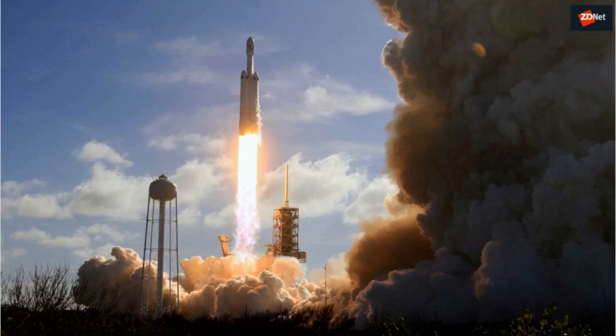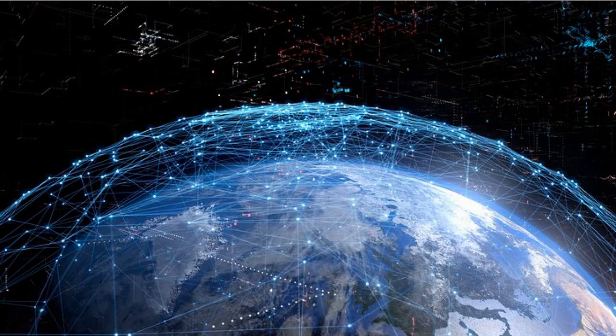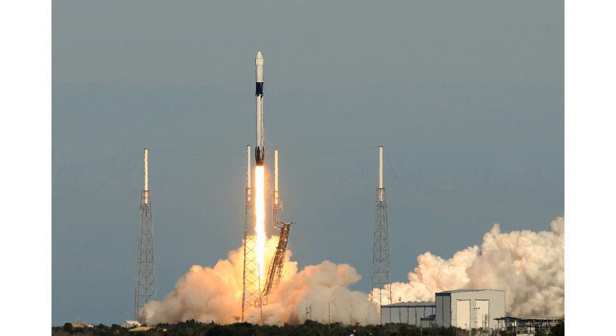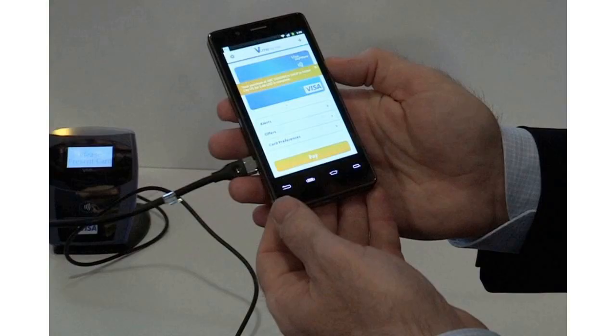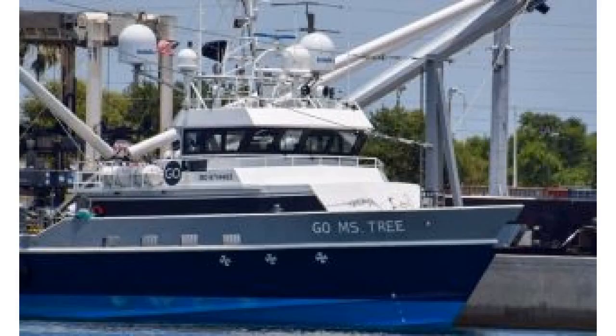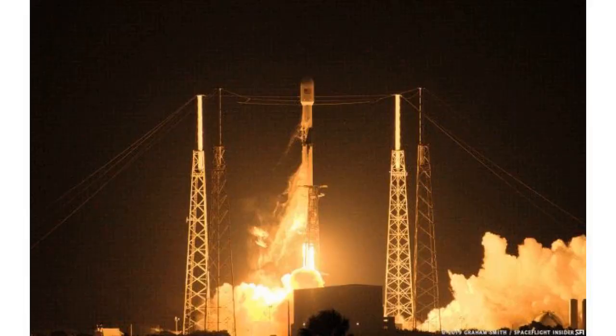The company will soon start using its fledgling Starlink constellation to stream videos and play high-bandwidth video games, in order to see just how much lag time there is in the service. The company says it will also implement changes on future spacecraft based on this launch. While we are pleased with the performance of the satellites so far, SpaceX will continue to push the operational capabilities of the satellites to inform future iterations, SpaceX said in a statement.